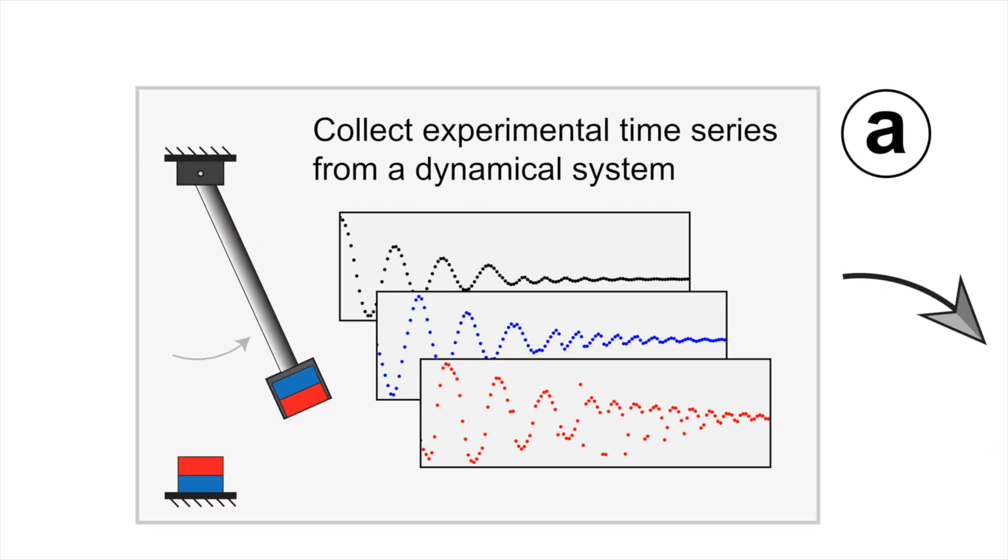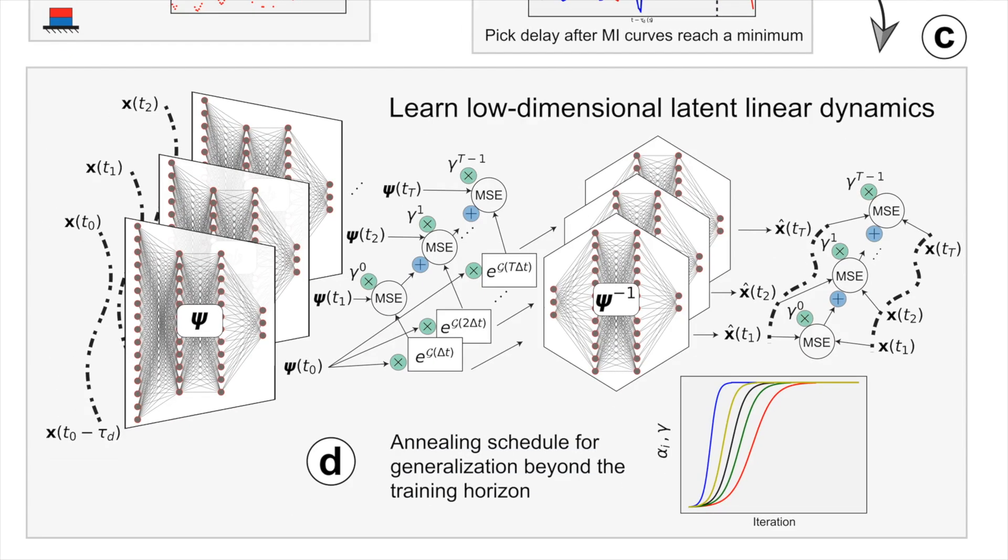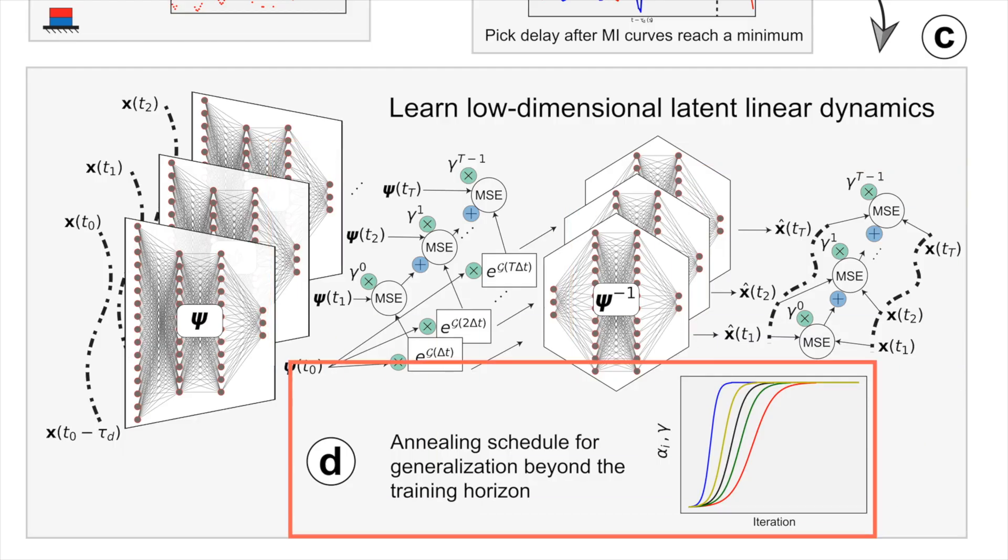Our framework uses time delay embedding in deep autoencoders with an information-theoretic approach to select the time delay before training. The system's new coordinates, or latent states, are constrained to be linear using Koopman-informed loss functions. Our approach achieves superior prediction generalization in lower-dimensional latent spaces with an annealing strategy applied to various hyperparameters during training.